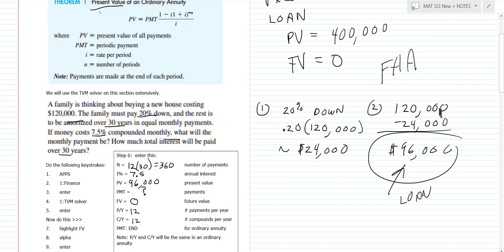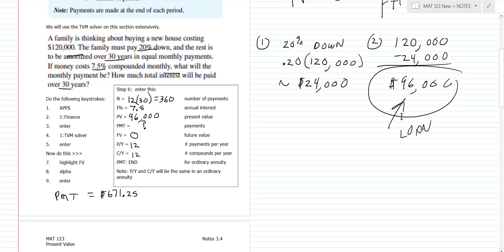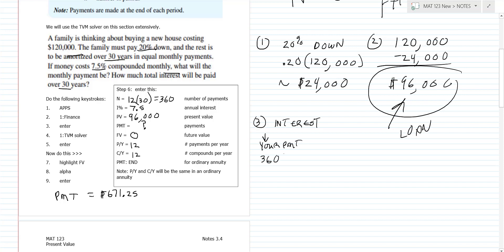Now there's one more part to this problem that you'll see on your test and your final. The third thing we're going to figure out is the total interest paid over the life of the loan. First, find your total payments: you're making 360 payments of $671.25 each, so we calculate 360 × 671.25.